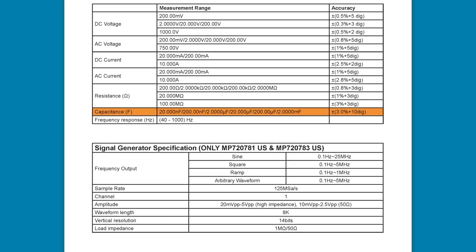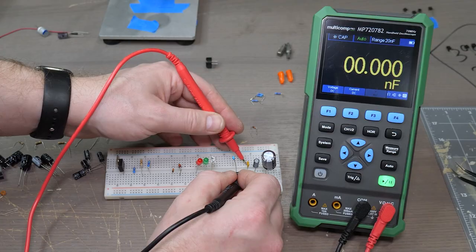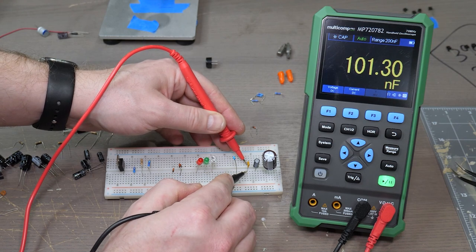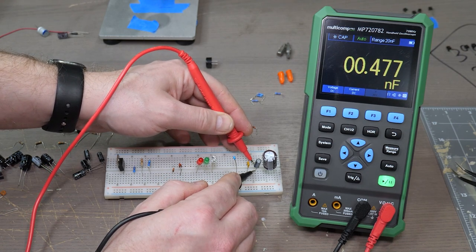And for caps, its datasheet says it supports capacitors from nanofarads to thousands of microfarads. For stuff in the 10 to 100 nanofarad range, it did fine, but it seemed to struggle to measure anything larger than 100 microfarads.